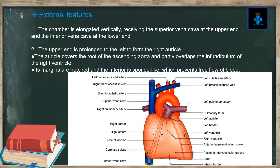External feature number two: the upper end is prolonged to the left to form the right auricle. The auricle covers the root of the ascending aorta and partly overlaps the infundibulum of the right ventricle. Its margins are notched and the interior is sponge-like, which prevents the free flow of blood.